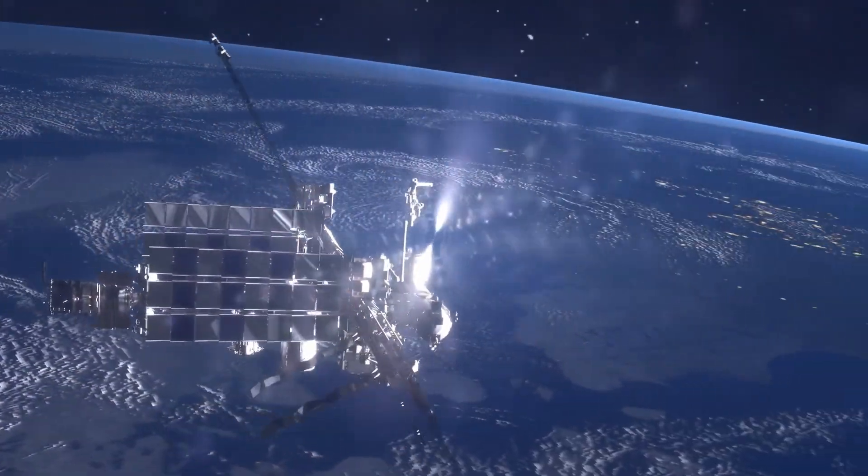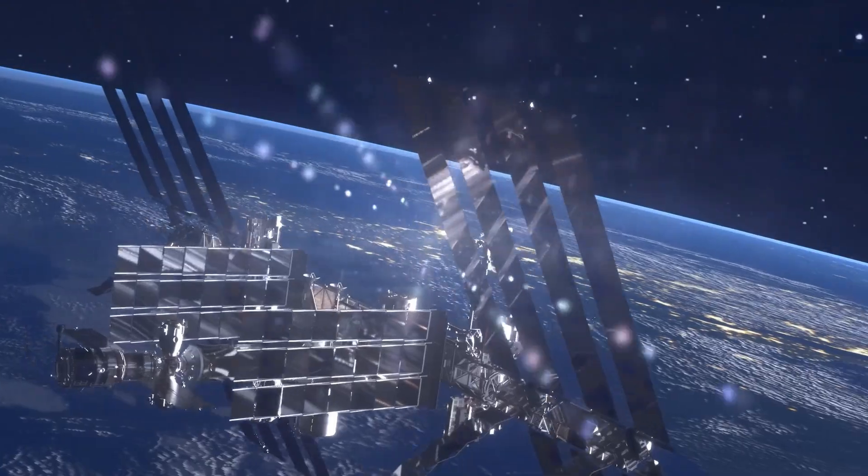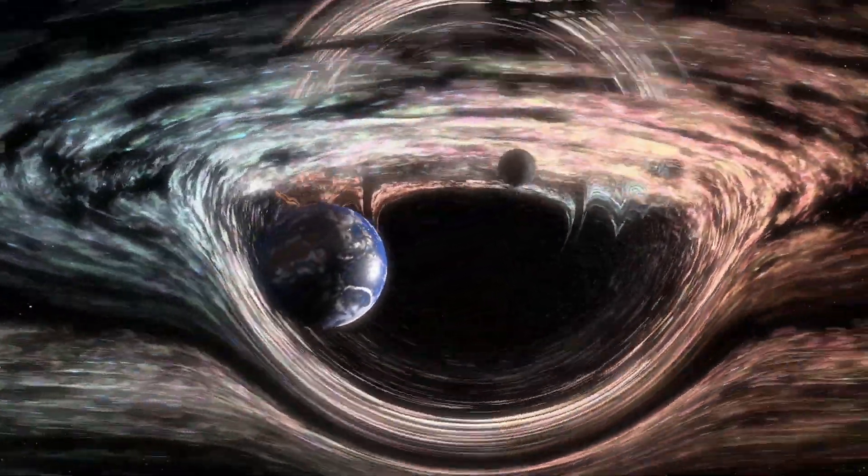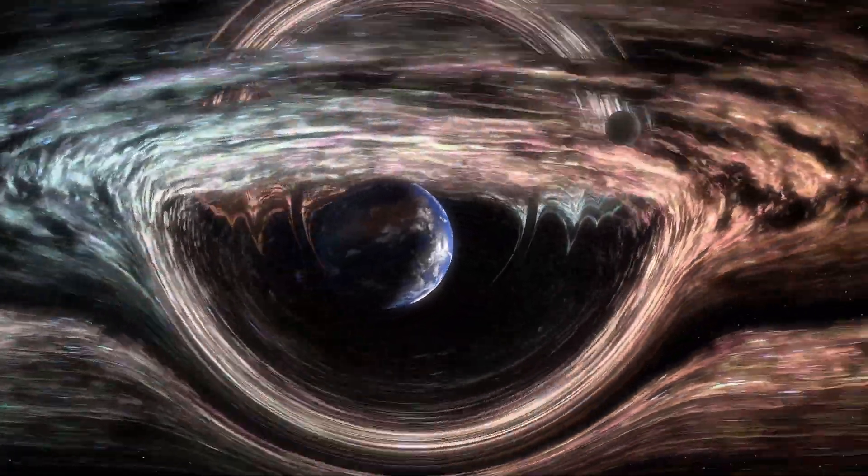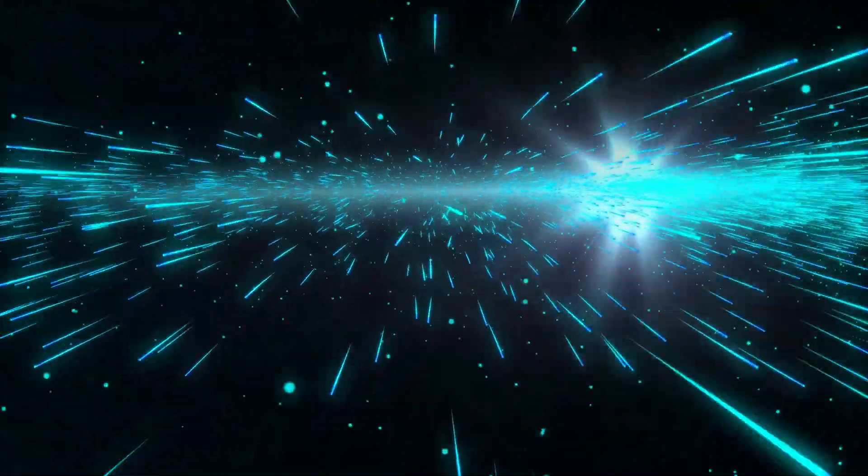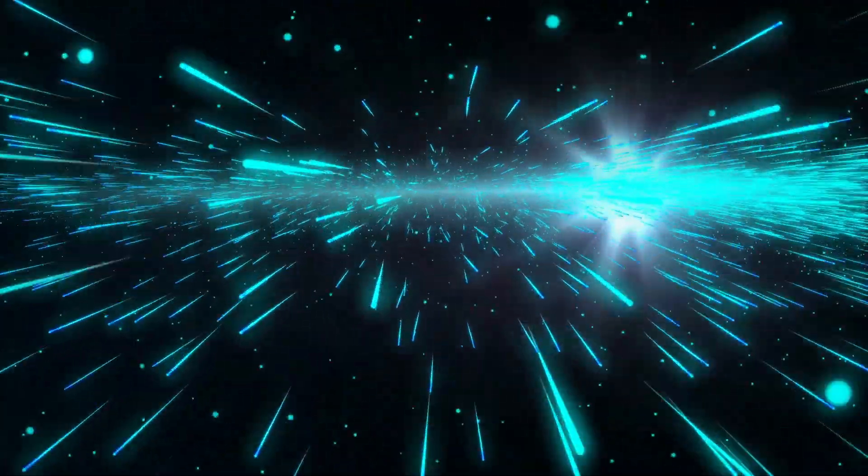Every second, International Space Station travels 5 miles around Earth. Every second, a gigantic supermassive black hole can swallow Earth-like planet. Every second light travels about 300,000 kilometers.